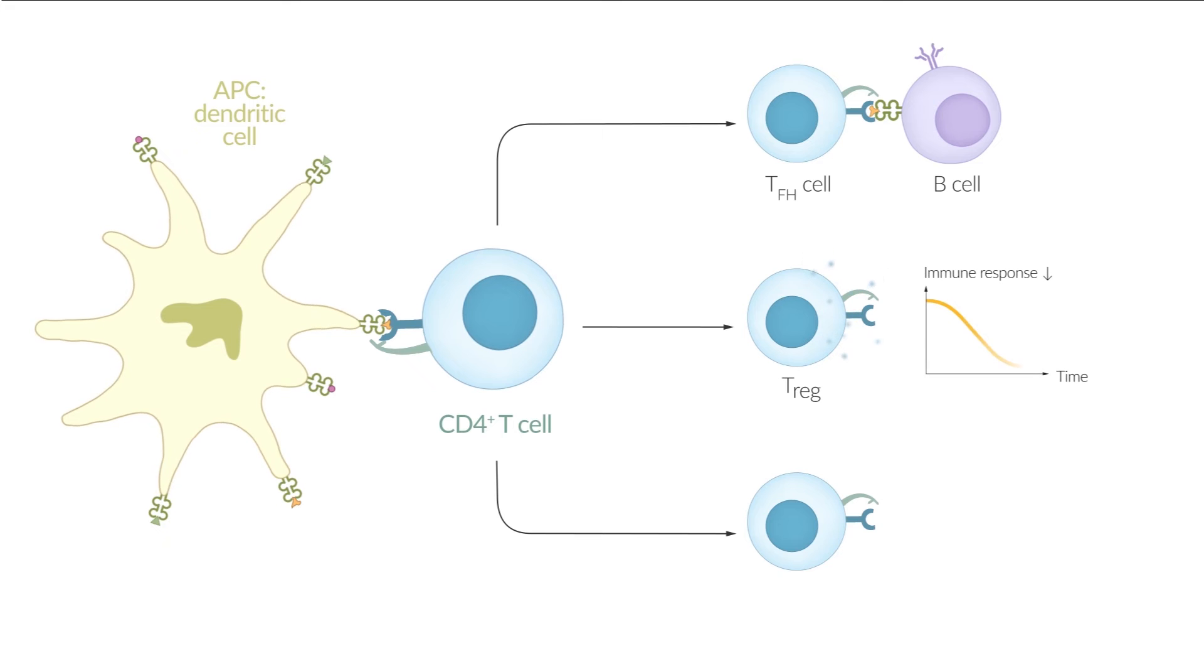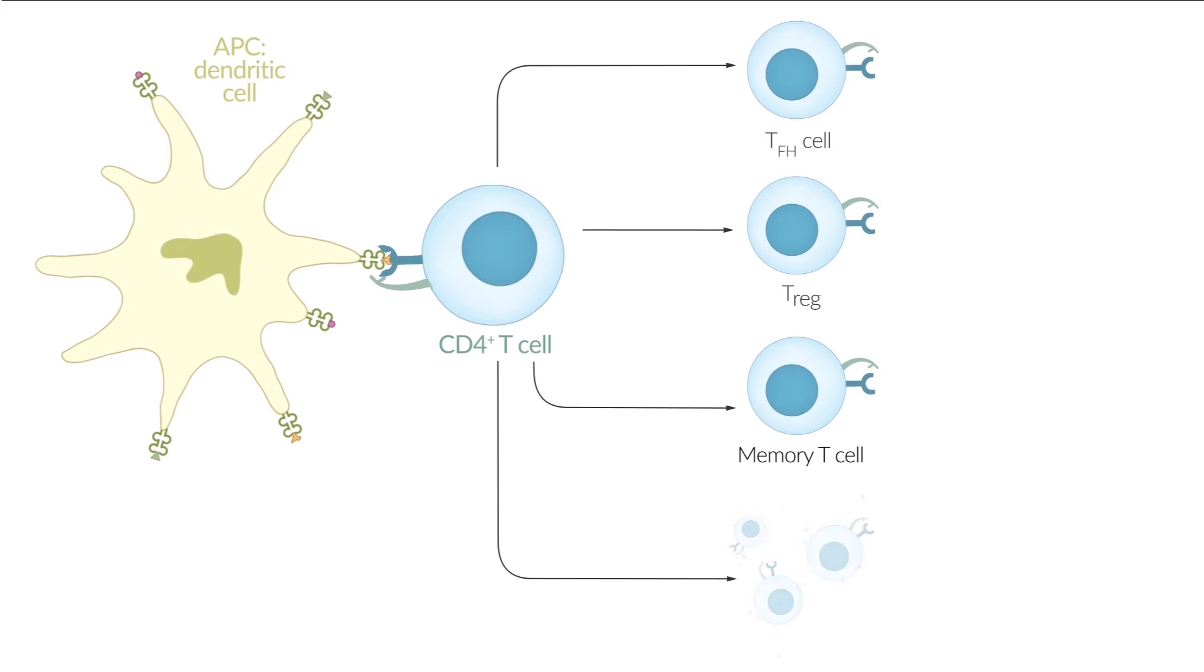Regulatory T cells suppress an excessive immune response. Memory cells remain in the body for years and elicit an immediate adaptive immune response to subsequent exposure to the same antigen. Depending on the invading pathogen, other T helper cells activate the cells of the innate immune response through cytokines.